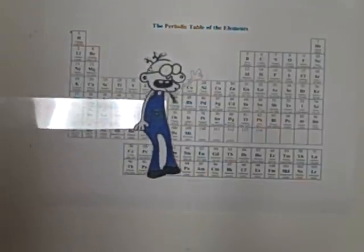The columns are called Groups. They tell y'all the number of electrons in the valence shell.